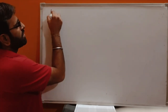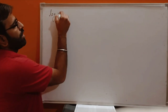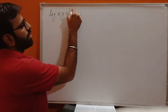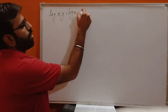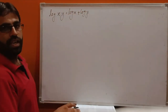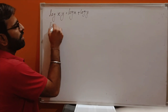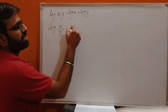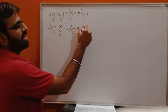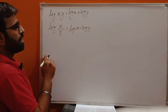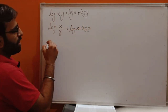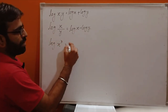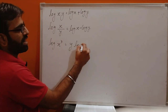The first rule is: when we have log(x × y), this value can be written as log x + log y. If we have log(x/y), this value can be written as log x − log y. If we have log x to the power y, this value can be written as y·log x.